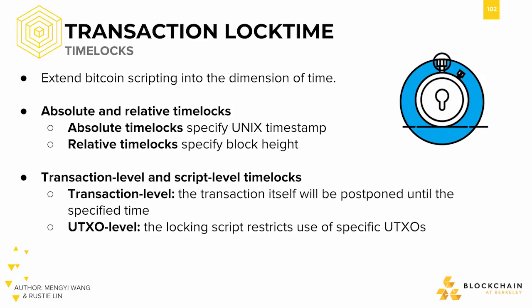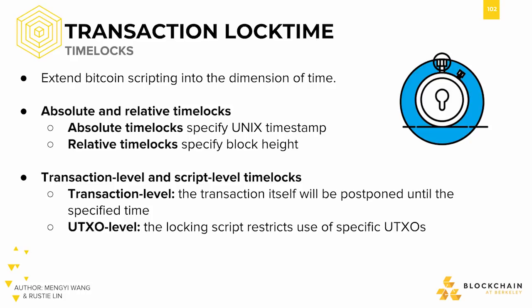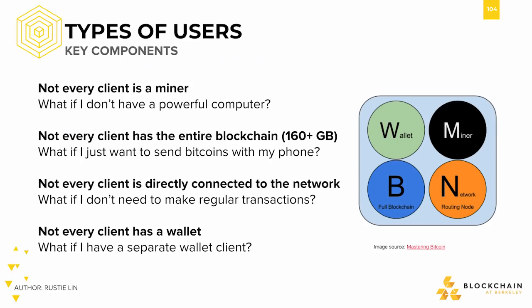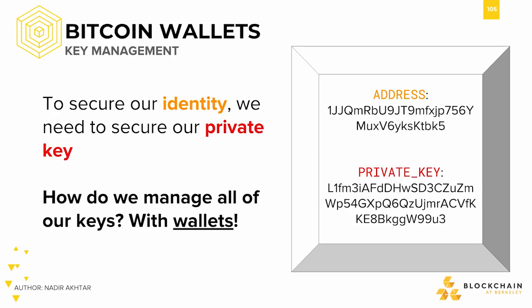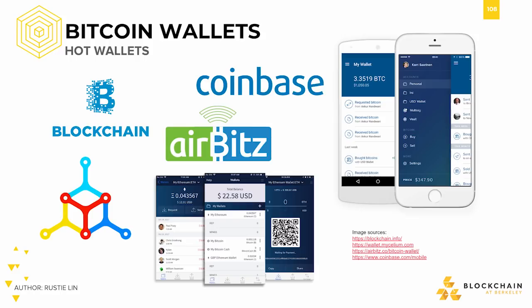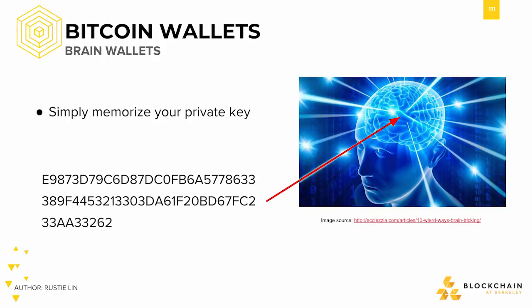We also took a closer look at time locks, which allow you to specify a time at which your bitcoins can be unlocked. After going through all of those technical details, we showed you how these characteristics manifest in real life. We went through the various types of users that someone could be in the Bitcoin network, depending on their desires and the amount of hardware they have. We went over how you can store your identity using wallets, the various types of wallets available, and some specific examples, including paper wallets, hardware wallets, and brain wallets — all of which let you keep your private key offline.